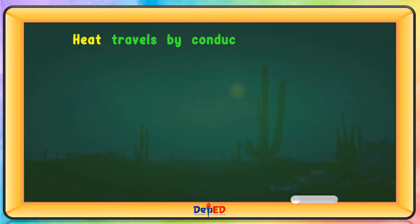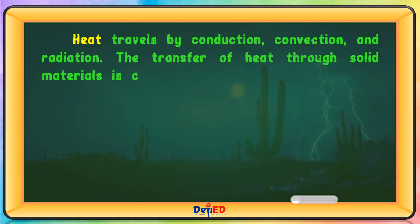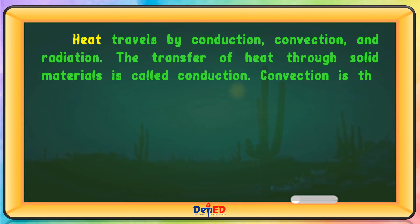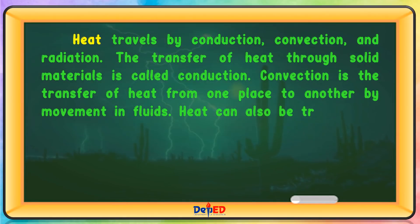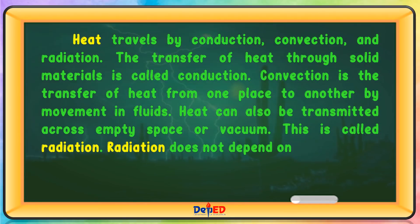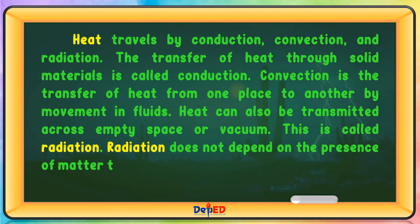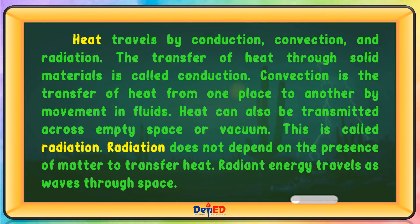Heat travels by conduction, convection, and radiation. The transfer of heat through solid materials is called conduction. Convection is the transfer of heat from one place to another by the movement in fluids. Heat can also be transmitted across empty space or vacuum — this is called radiation. Radiation does not depend on the presence of matter to transfer heat; radiant energy travels as waves through space.